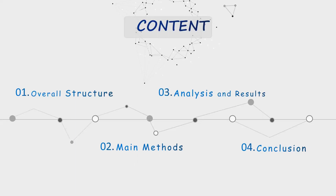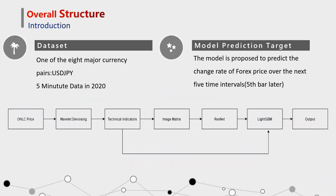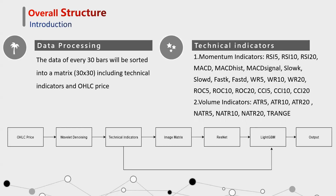Now let's see the overall structure. In the research, all the data are from the main data site of USD/JPY currency pair, which is one of the eight major Forex currency pairs in 2020. The model is proposed to predict the change rate of Forex price over the next time intervals, which is a few bars later. The data of every 30 bars will be stored into a 30×30 matrix, including technical indicators and open-high-low-close (OHLC) price.